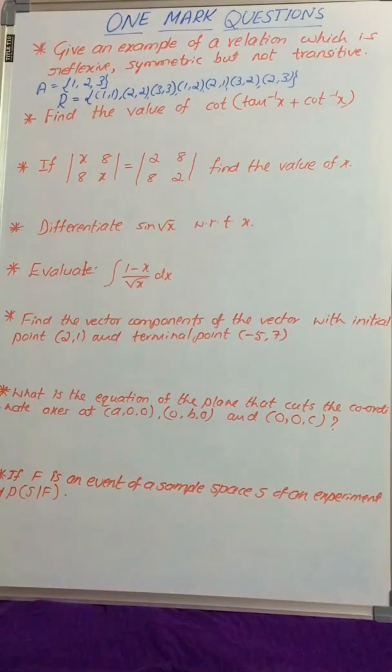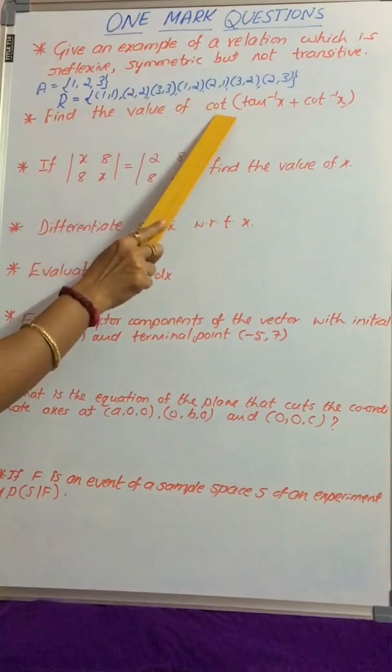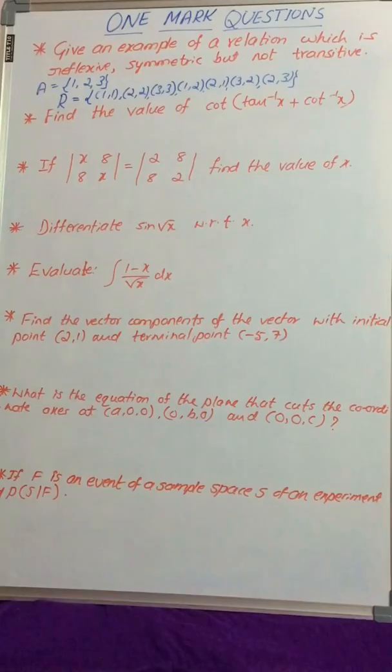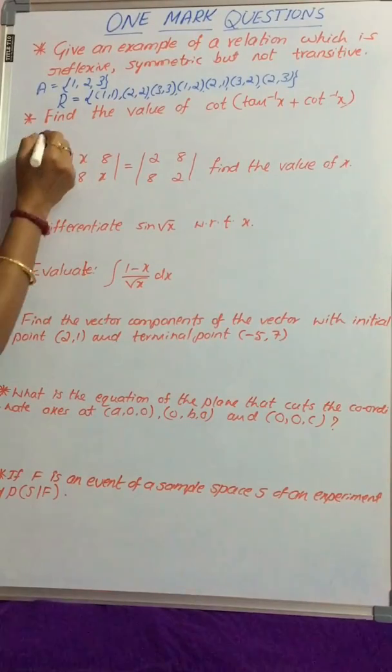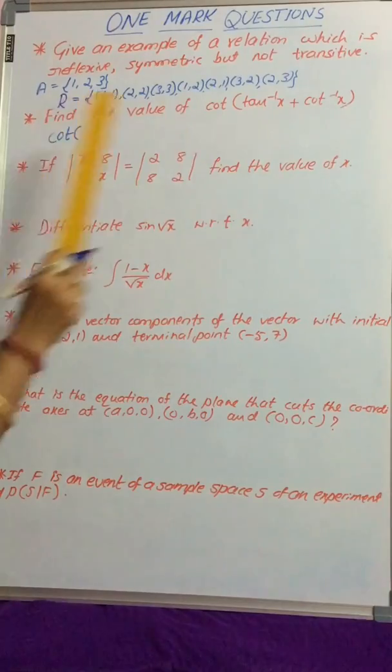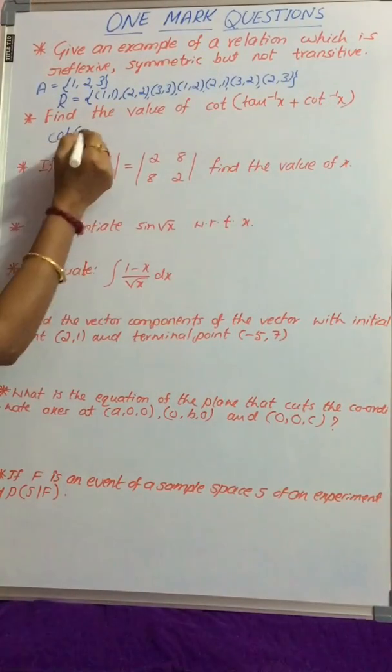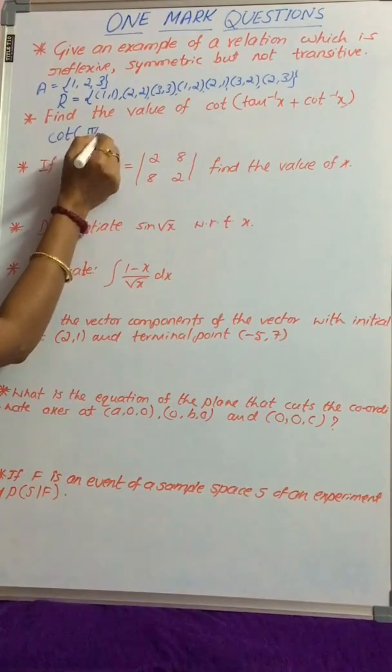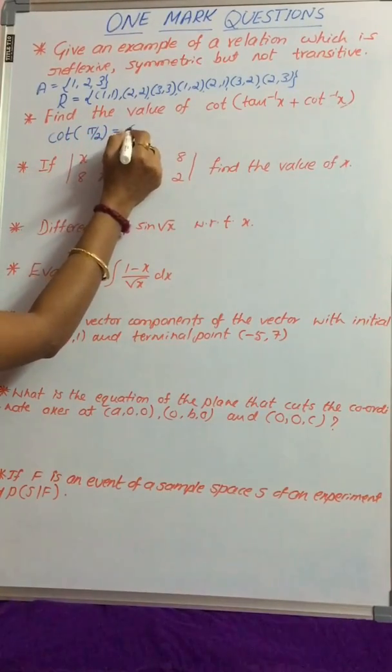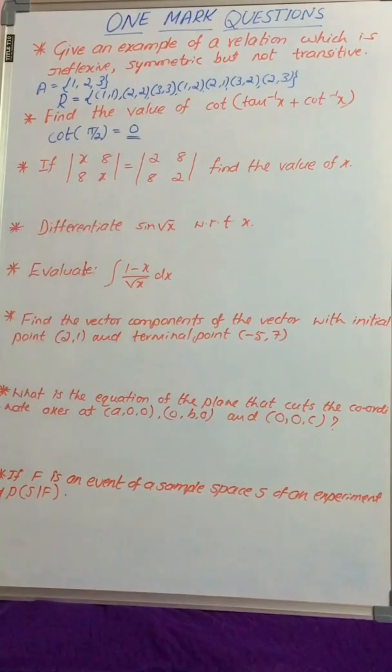Now consider the second question: Find the value of cot(tan⁻¹x + cot⁻¹x). Since tan⁻¹x + cot⁻¹x = π/2, this becomes cot(π/2), which equals cot 90°. The value of cot 90° is 0.